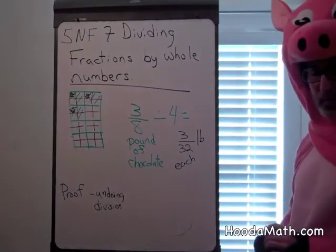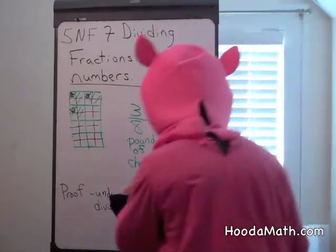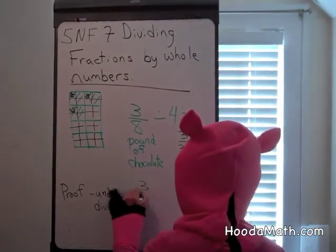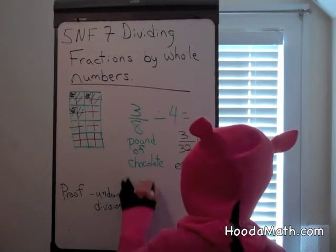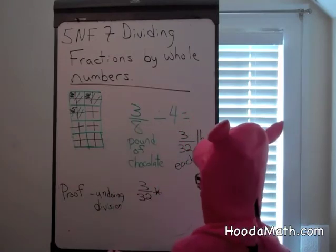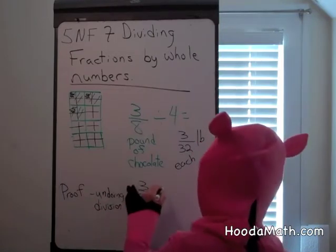Now, to prove that you did this correctly, we're going to multiply three thirty-seconds by four and see if we get three eighths. We're undoing the division by multiplying.